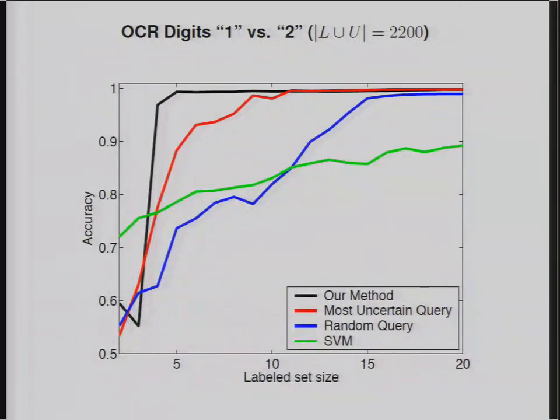If you choose the most uncertain query, then it takes you maybe 12 points to reach that same level. If you pick points randomly but still use a semi-supervised method, then you get there around here. And if you just ignore the unlabeled data and you just train unlabeled data with an SVM, for example, then you get this here. The story here should be interpreted as unlabeled data helps in a semi-supervised learning context, and active learning with a good criterion definitely also helps.